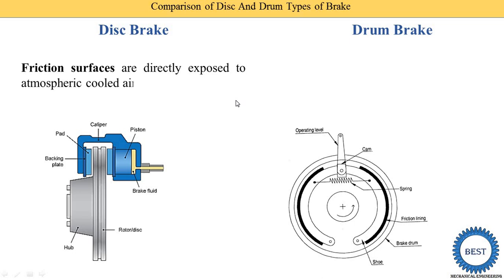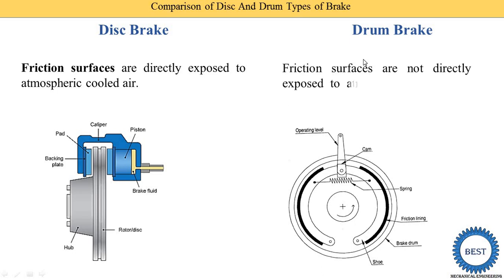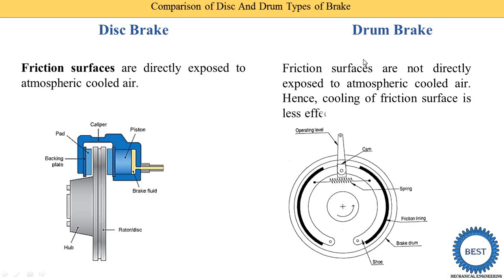The first point is related to the friction surface. In a disc brake, the friction surfaces are directly exposed to the atmosphere, meaning the friction pads are open to the atmosphere and are easily cooled by atmospheric air. In a drum brake, the friction surfaces — the friction linings — are inside the drum and are not directly connected with the atmosphere, so cooling of the friction surface is less effective.